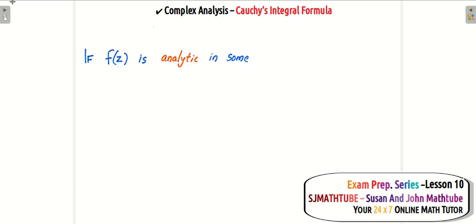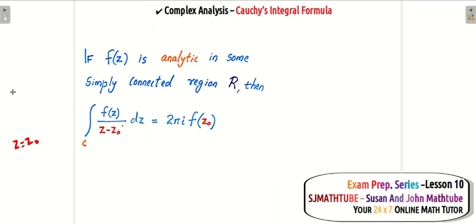The statement goes like this: If f(z) is analytic in some simply connected region R, then that integral with z naught in the denominator. So I put red intentionally because if you input z equal to z naught, look at this, z stands for any complex number and z naught stands for a particular complex number.